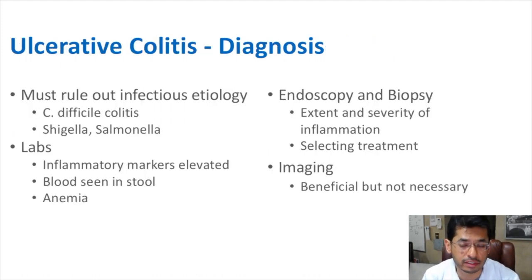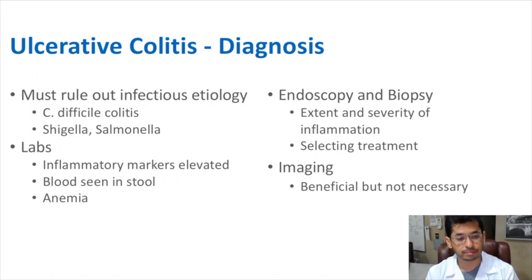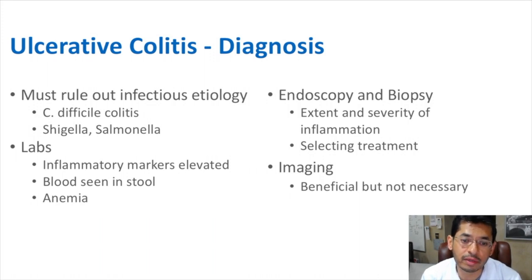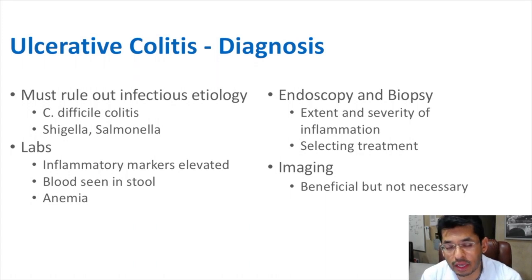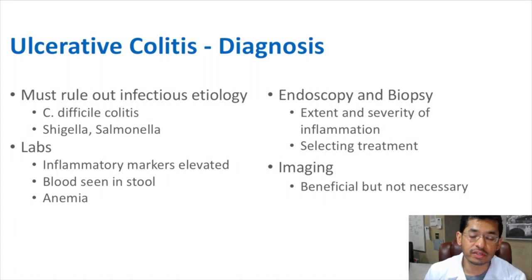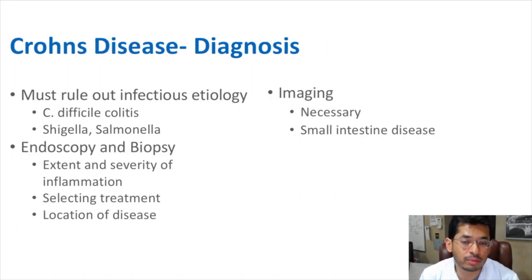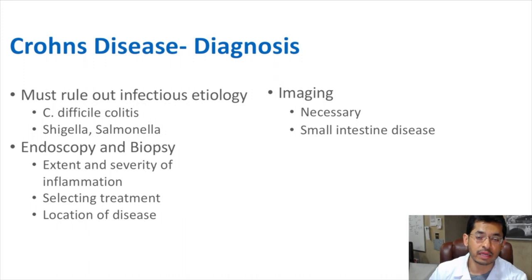The way we diagnose ulcerative colitis is a combination of multiple different factors. We have to rule out any infectious causes, including a really bad bacterial infection called C. difficile colitis. Blood work can help us see if there are inflammatory markers that are elevated, blood in the stool, or anemia. With endoscopy and biopsies, we can see the extent and severity of inflammation and determine treatments. Imaging may be helpful in some patients. For Crohn's disease, imaging is actually necessary to rule out manifestations beyond the colon.